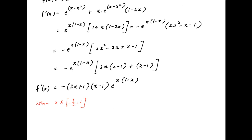When x lies in the interval minus half to 1, 2x plus 1 is always positive, x minus 1 is always negative, and e raised to the power x times 1 minus x is positive. So we have 2 positive signs and 2 negative signs in the expression for f'(x), and therefore f'(x) is always positive in the given interval.